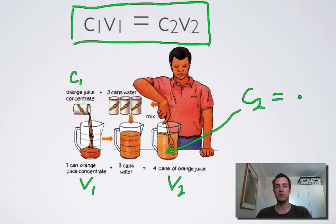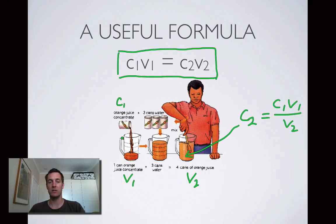Now we should be able to rearrange this formula to find C2. So C2 equals C1V1 over V2. I've just divided both sides by V2. I don't know what C1 is here in this particular problem, but I can put some numbers in and say that equals V1, which is one can, divided by V2, which is four cans. So C2 equals C1 times a quarter. In other words, our new concentration is a quarter of our original concentration.